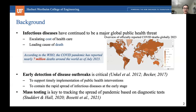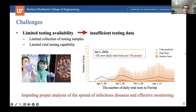As everybody knows, infectious diseases, including the COVID-19 pandemic, have continued to be a major global public health threat due to the increasing cost of health care and the cost of deaths. It is very critical for us to detect disease outbreaks as early as possible to support timely implementation of public health interventions and to contain the rapid spread of infectious diseases at the early stage. We know that mass testing is key to tracking the spread of pandemic based on diagnostic tests. But the challenge is that testing availability is limited, especially at the early stage of a novel infectious disease, which leads to insufficient testing data that impedes our analysis and effective monitoring of infectious diseases.